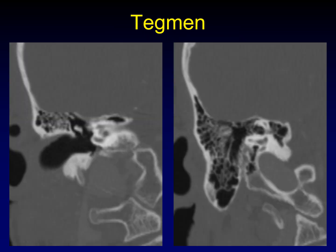Here's what the tegman is supposed to look like — a normal tegman. Since this is the middle ear cavity, this is the tegman tympani over the tympanic cavity, and here's the tegman mastoidium seen in its full glory over the mastoid air cells. Notice how flat overall the tegman is — it doesn't dive down deep laterally; it's more or less flat across its entire surface.